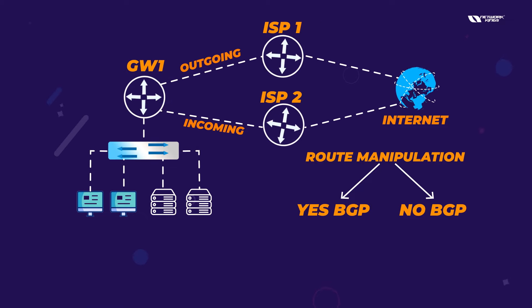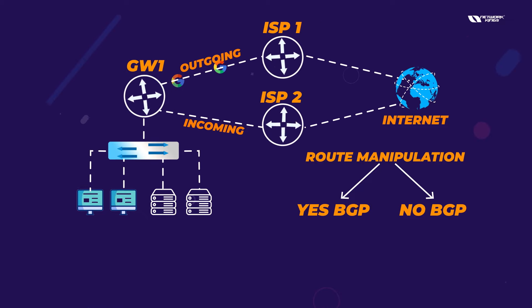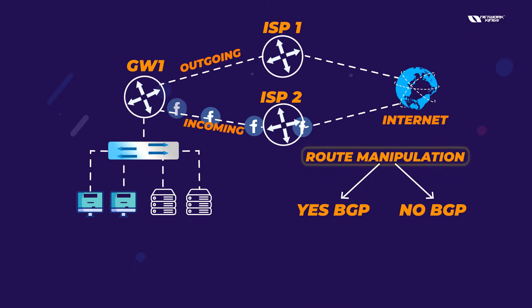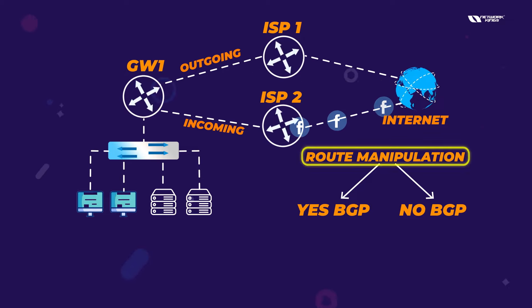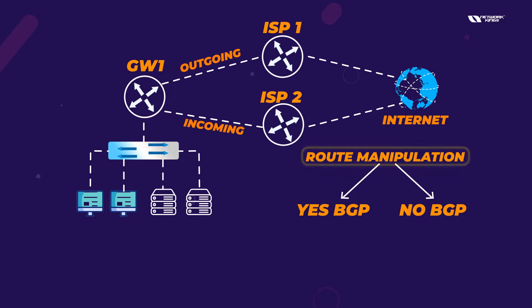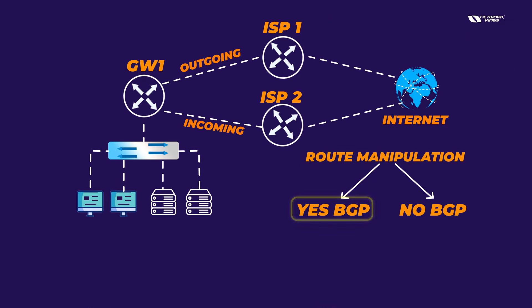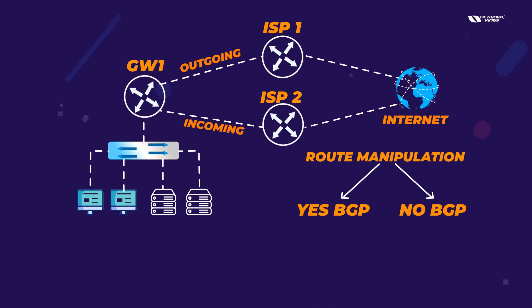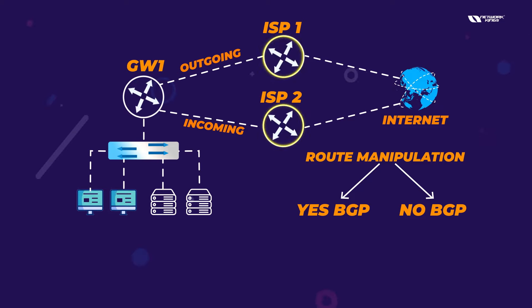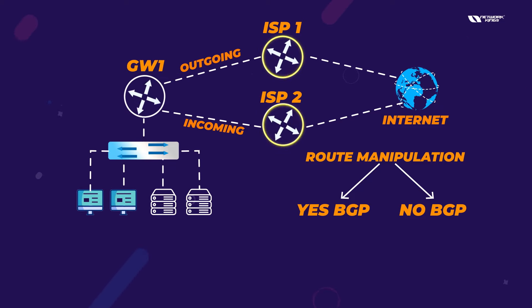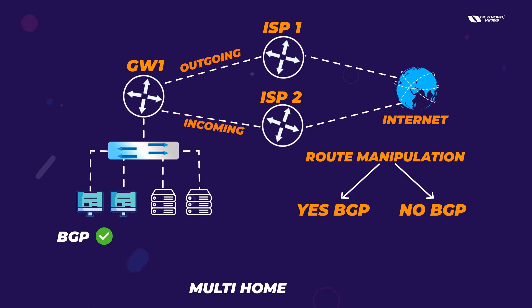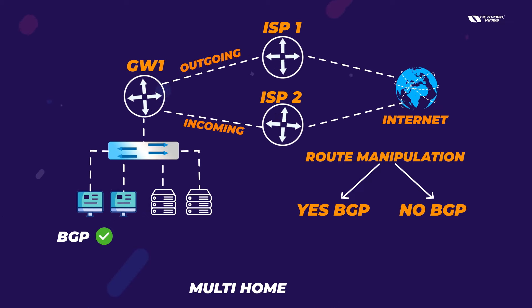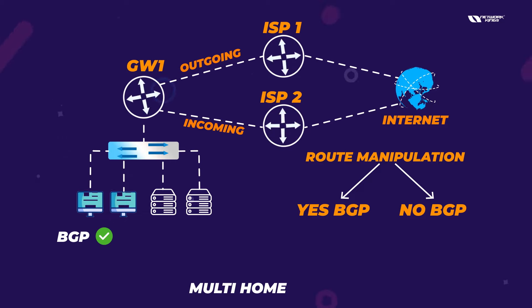If you want to send Google traffic from ISP1 and Facebook traffic from ISP2, that's called route manipulation — changing traffic paths according to company requirements. This scenario is called multi-home, because you have two ISPs. In multi-home, you can run BGP, but it depends on your company's requirements. I've seen many real industry networks with multi-home that are not running BGP.